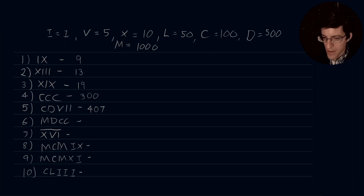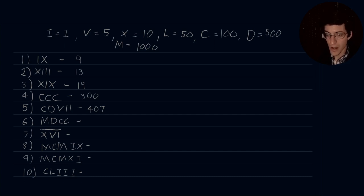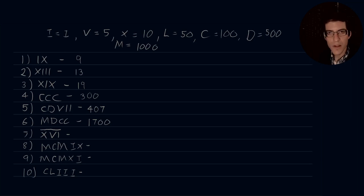Number six, MDCC: we have our M value, which is our highest value, and D is less than that, so we simply add 500 to 1,000. Then CC are the 100 values, so we add those, giving us 700. The 1,000th value has not been modified, but our hundreds value has been modified by adding 2 to the 500, so we end up with 1,700.